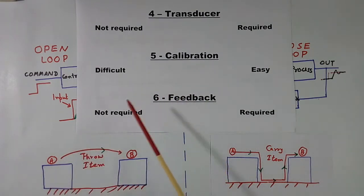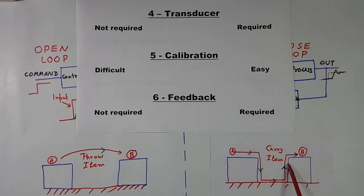Calibration. I have written here it is difficult. When you throw the ball, you must know which direction, at what speed, which side this ball to be thrown. This has to be calibrated. Hand to be calibrated. Here, calibration is very easy. No judgment required. Simply take and carry and locate this person and give the ball. So calibration is easy here. Calibration is difficult in open loop. Left side is open loop, right side is closed loop.